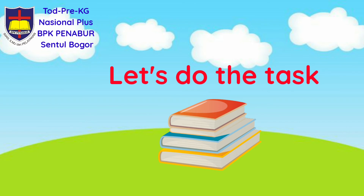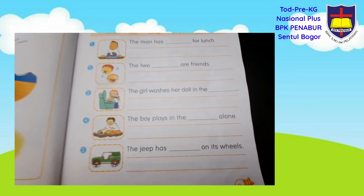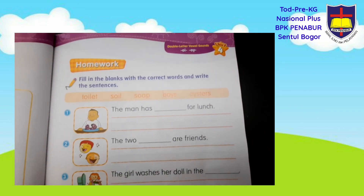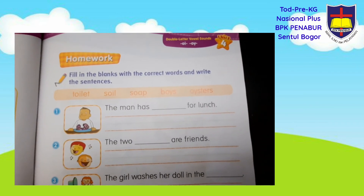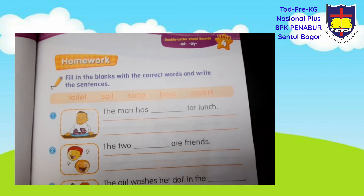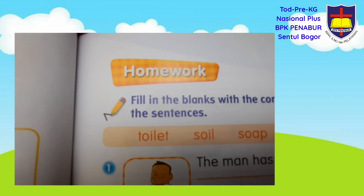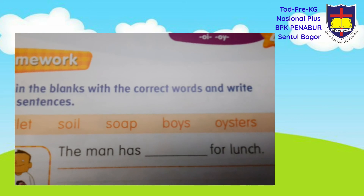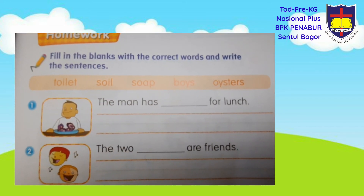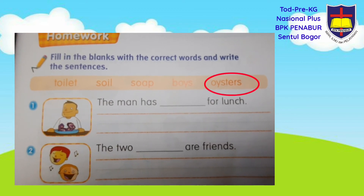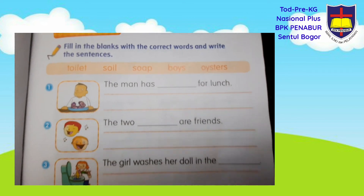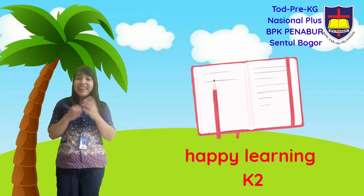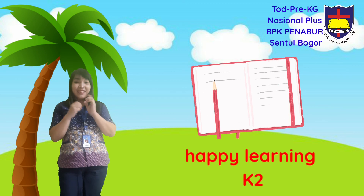Now let's do the task. You may take your Sanskrit book and open to page 37. There are five sentences with missing words and you have to fill in the blanks with the correct words, then write the sentences. You may choose the words inside the box. Number one: 'The man has oyster for lunch.' Fill in the blanks, rewrite the sentence, and continue until number five.